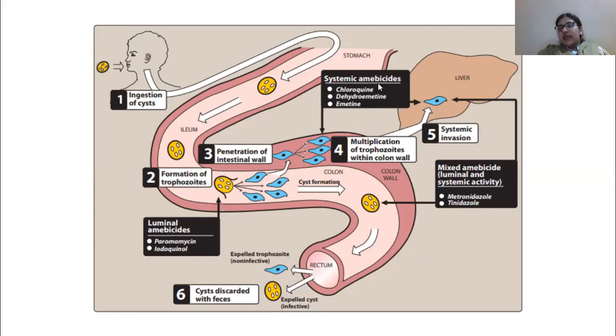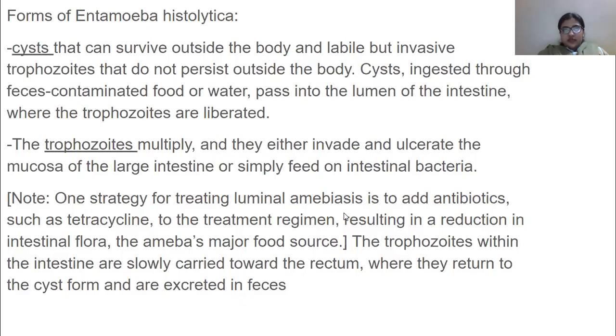That category is invasive. This would be systemic amebicides, which means these are the medicines which would kill the trophozooids which are in the blood. The class includes chloroquine, dehydroemetine, and emetine. Within the intestinal wall, they would multiply and then invade other organs. This is the entire cycle of how exactly E. histolytica is infecting a person and these are the medicines which can be given in order to treat people.